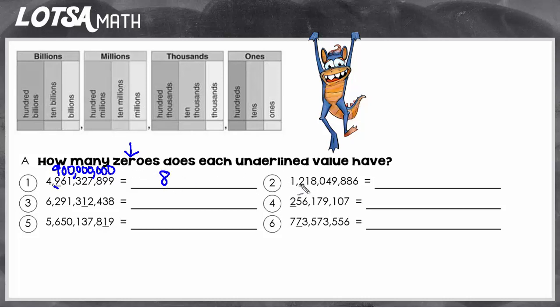So let's look at this one. This two is in the hundred millions place, so the value of the two is 200 million. But the question is actually asking, how many zeros? So three, four, five, six, seven, eight.